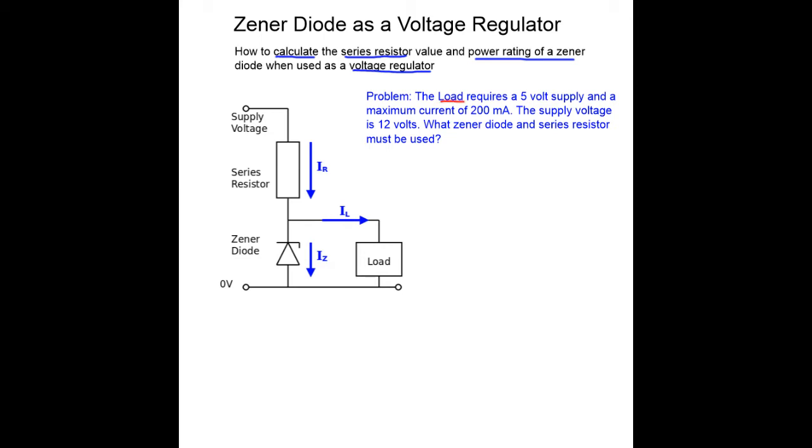So the load requires a 5 volt supply and a maximum current of 200 milliamps, which is 0.2 amps. Very important to remember that conversion. The supply voltage is 12 volts. What Zener diode and series resistor must be used?